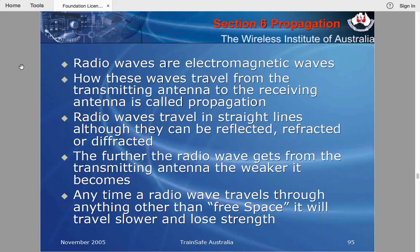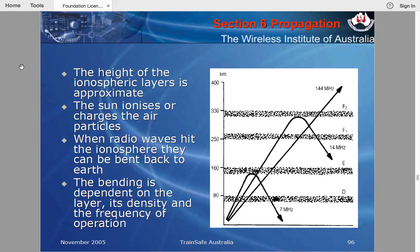Anytime a radio wave travels through anything other than free space, it will travel slower and lose strength. Radio waves do travel through walls and buildings, but some walls absorb more energy than others — a steel building, for example, will absorb more radio waves — and the signal becomes weaker.